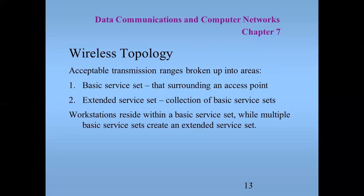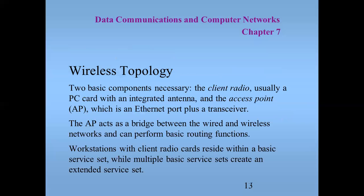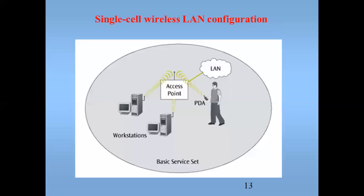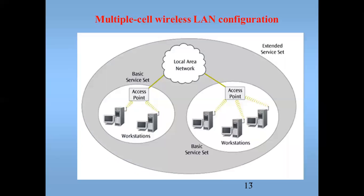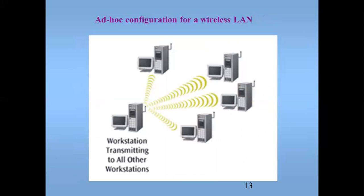There are two basic components. The client radio is usually a PC card with an integrated antenna, and there is the access point (AP), which is a stand-alone transceiver. The AP acts as a bridge between the wired and the wireless network and can perform basic routing functions. Workstations with client radio cards are received within a basic service set, while multiple basic service sets create an extended service set. Figures show a single wireless LAN configuration and an ad-hoc configuration for wireless LANs.